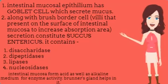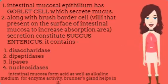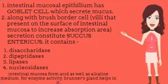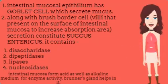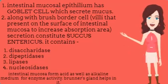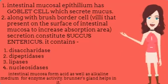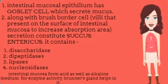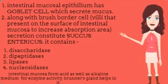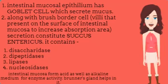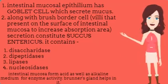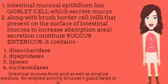The intestinal mucosal epithelium has goblet cells which secrete mucus. The secretion of brush border cells of the mucosa along with goblet cell secretion constitutes succus entericus. This juice contains a variety of enzymes: 1. Disaccharidase, 2. Dipeptidase, 3. Lipases, 4. Nucleosidases. The intestinal mucosa maintains acidic as well as alkaline pH for enzymatic activities. Submucosal Brunner's glands also help in this process.